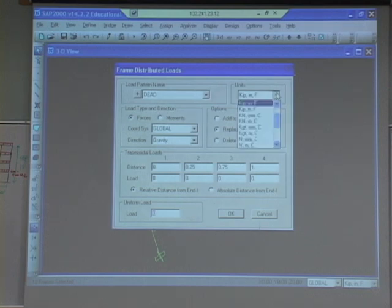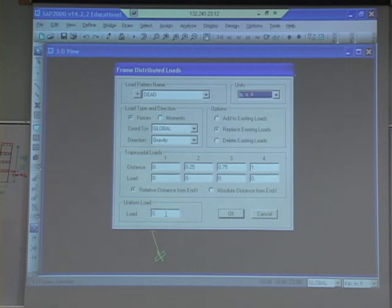And I want to put in 800 pounds per foot. So we're in kips, right? So we want to go to, let's go to pounds and feet. So I want to put in 800 pounds per foot. Now I'm not sure if this is going to point up or down. We'll find out, right? I don't remember if I have to put negative 800 or positive 800 in there, but we'll see.